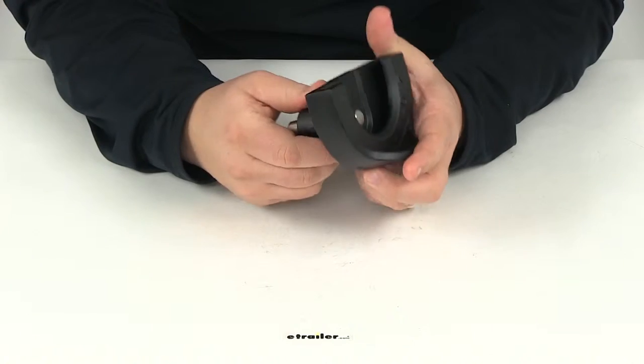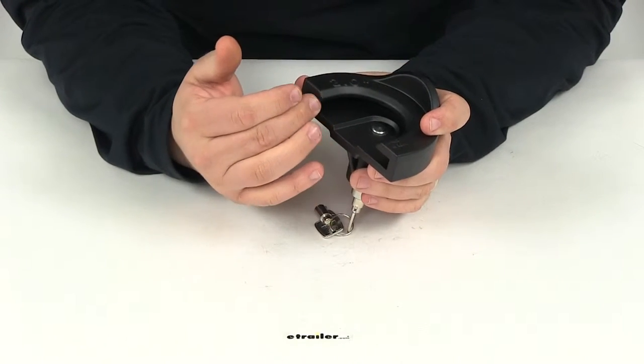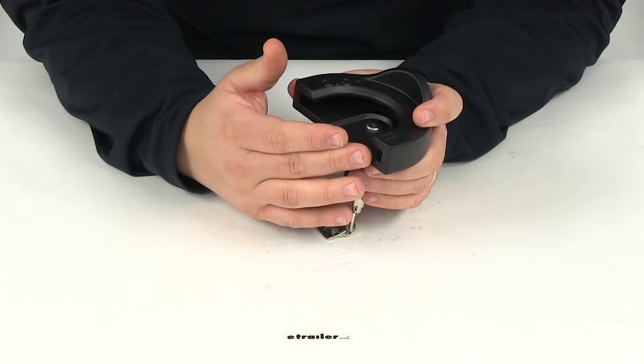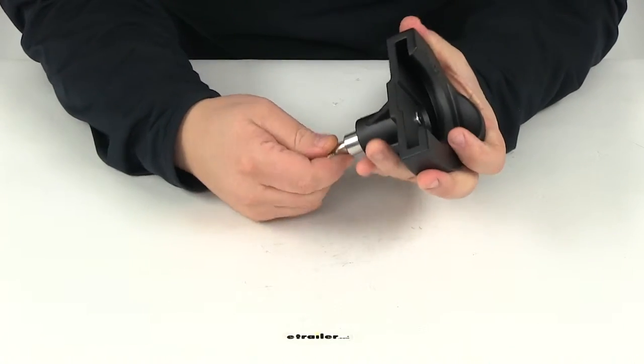That's going to disengage the pin, allowing this portion here to fit around the socket of the coupler. This needs to go around the lip that surrounds the base of the socket. Once you get that on there,